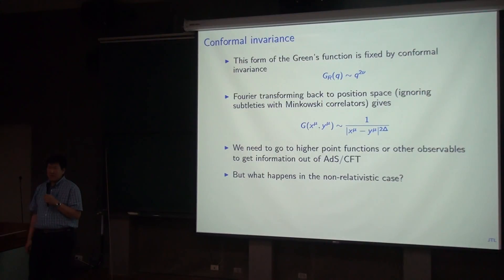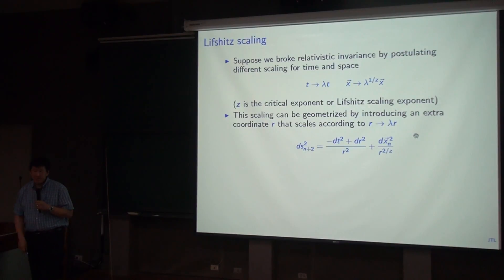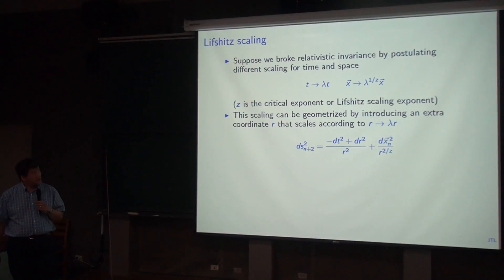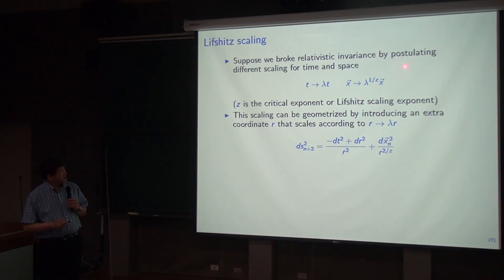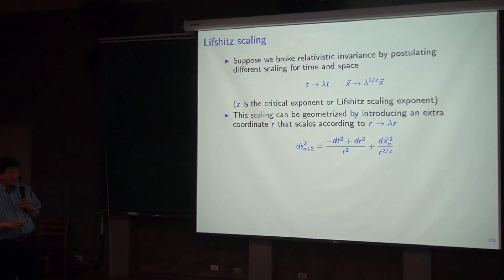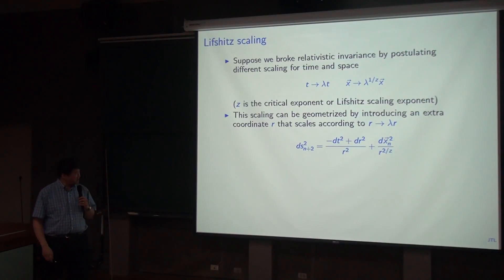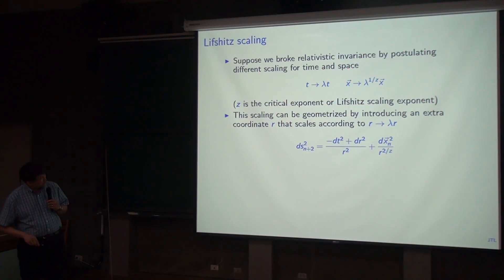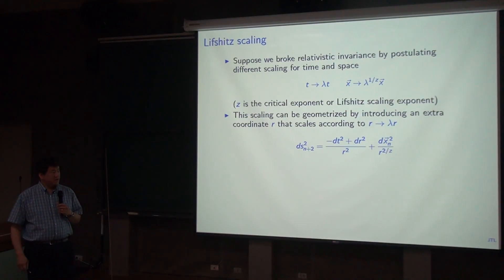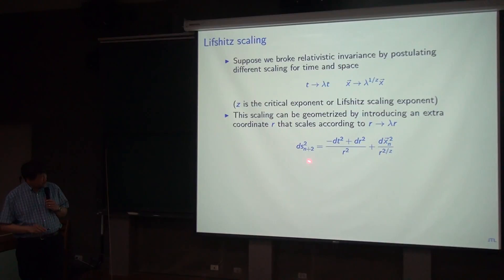Now let me consider the non-relativistic case. What I mean by non-relativistic is I want a boundary theory with non-relativistic scaling, while the bulk theory is still described in a relativistic manner. The scaling we have in mind, which might be related to a quantum critical point, is splitting off time versus space. If I scale time by lambda, then the space direction scales by lambda to the 1/z. Conventionally, if x scales by lambda, time scales by lambda to the z, where z is the dynamic exponent. To have a bulk description, you add an r direction and can write a metric accordingly.